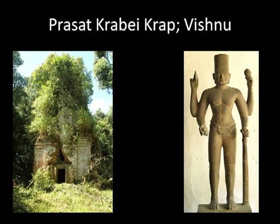On the right you have one of three remarkable sculptures of Vishnu in remarkable preservation state, all now in the National Museum, found in a series of three temples called Krol Romeas. There were many temples there, and they all give an indication of the broad extent of the Cambodian power structure that had Angkor as its center.